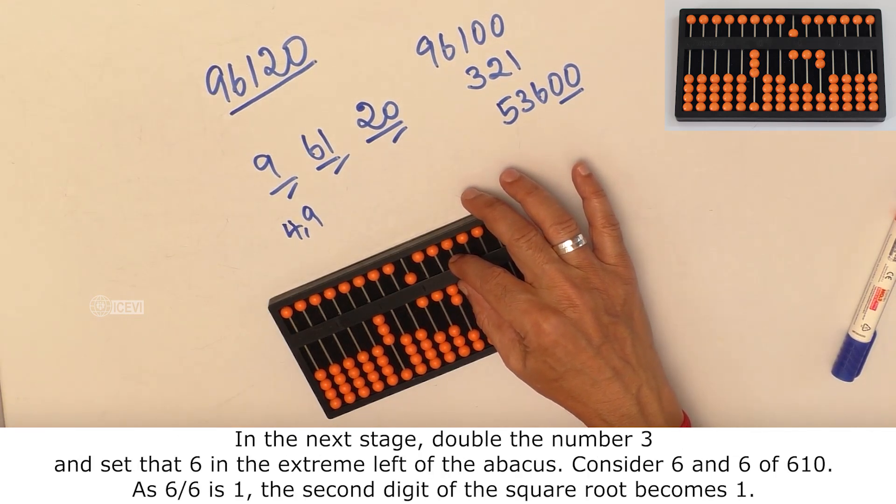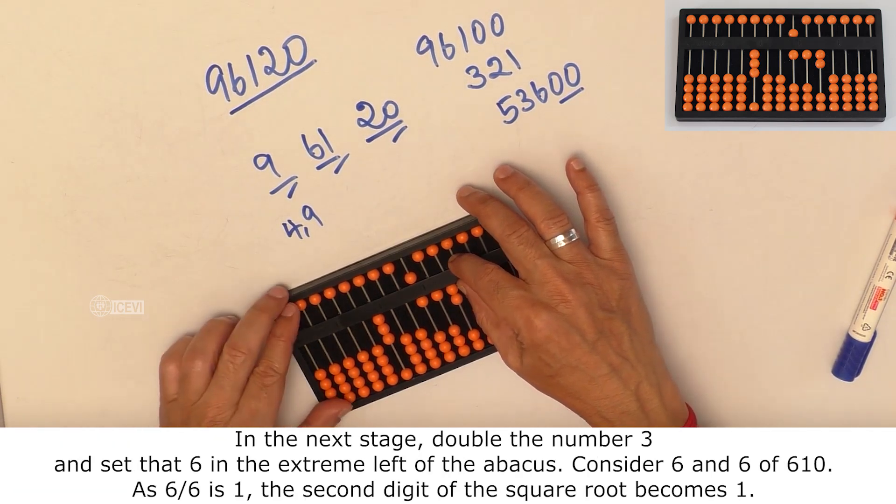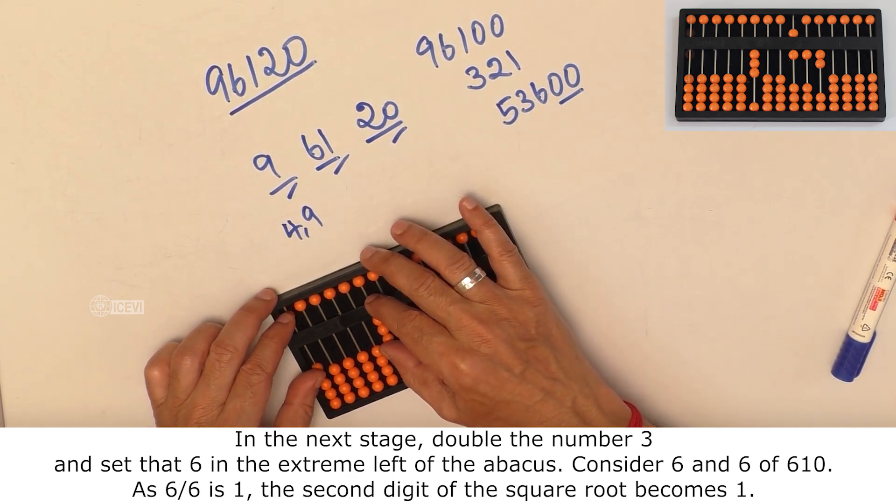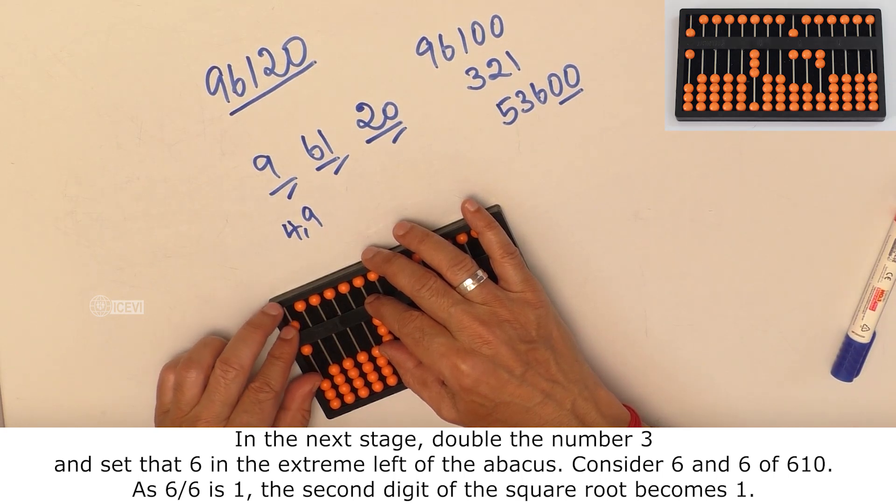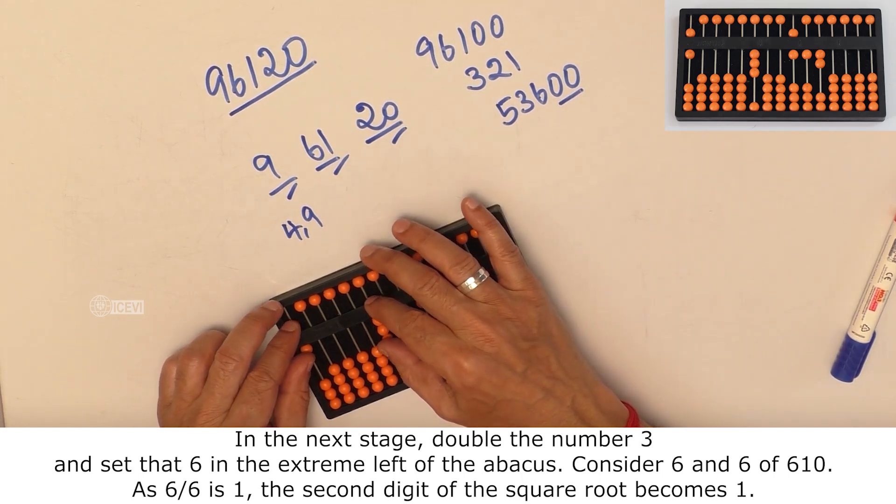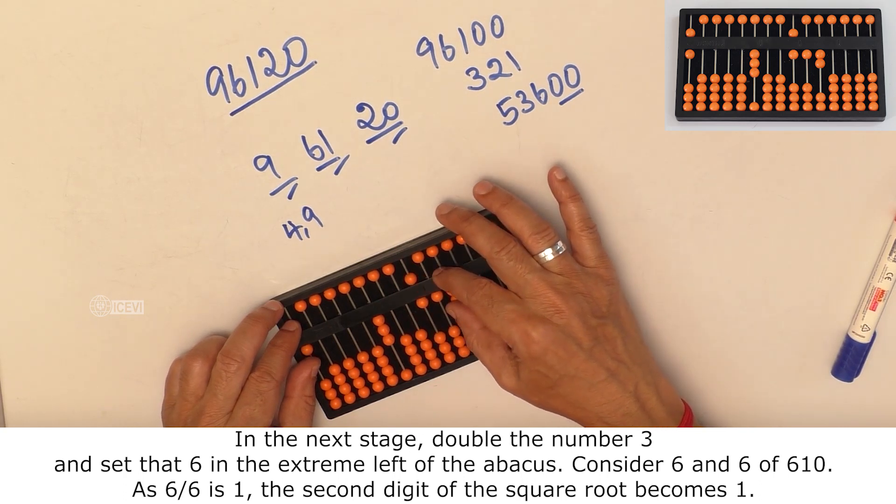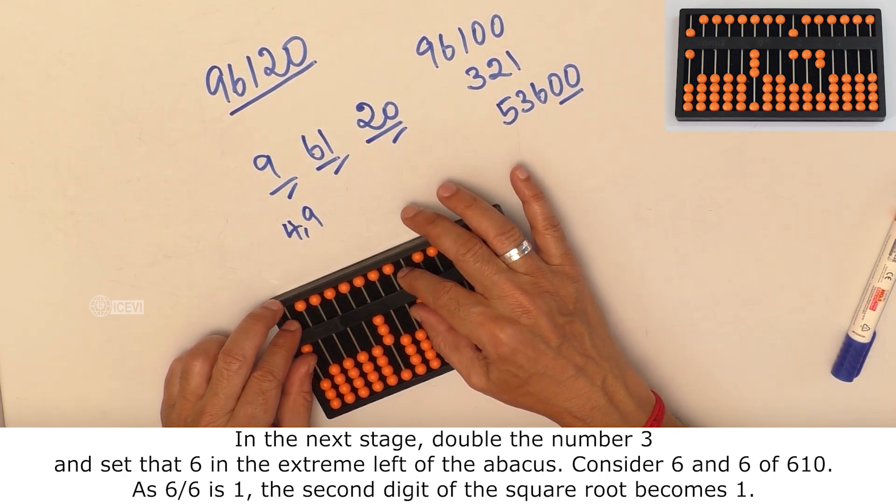In the next stage, double the number 3 and set that 6 in the extreme left of the abacus. Now, consider 6 of the 610. As 6 by 6 is 1, the second digit of the square root becomes 1.